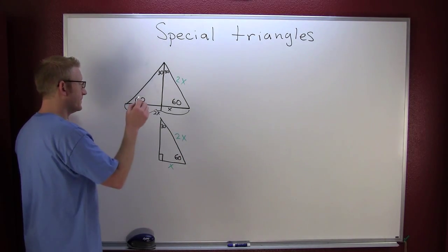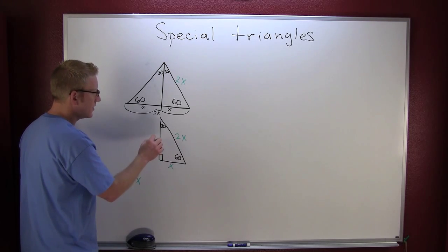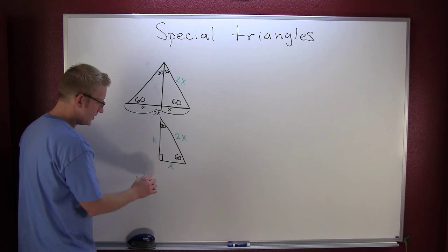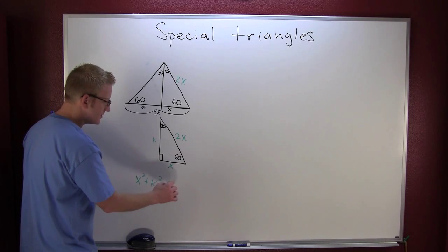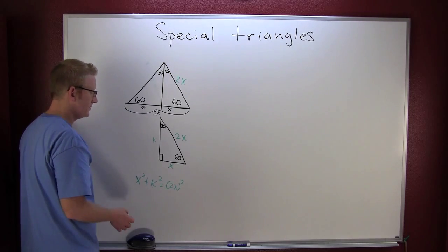Now my little side opposite my 30 is x, and this one's x, and this one's 2x. So if we use our Pythagorean formula we have, why don't we just call this k squared plus k squared is 2x squared.